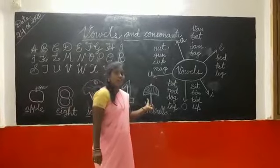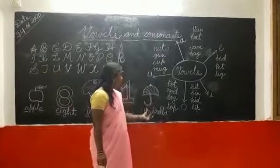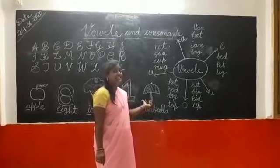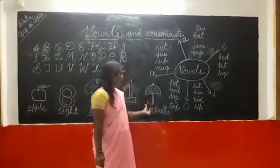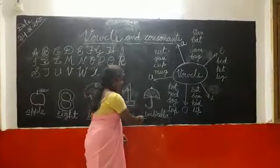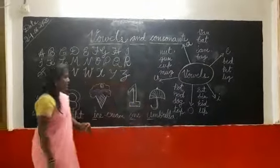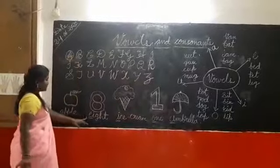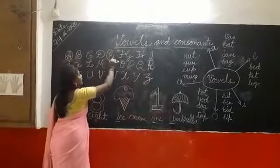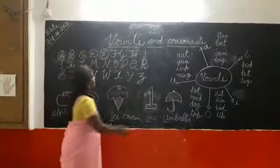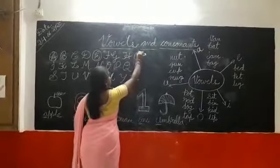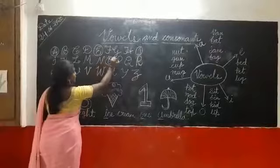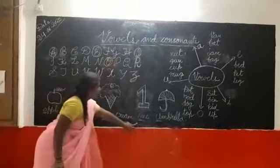And what is this picture? Umbrella. So here? When can we use Umbrella? In rainy season children. Did you know that? Yes. And what is the first letter of this? U. See children. Observe here. A, E, I, O, and U.